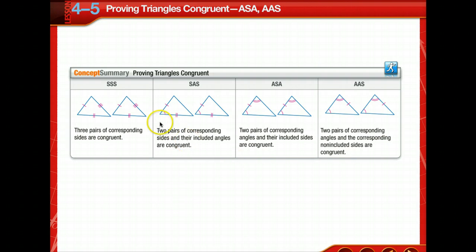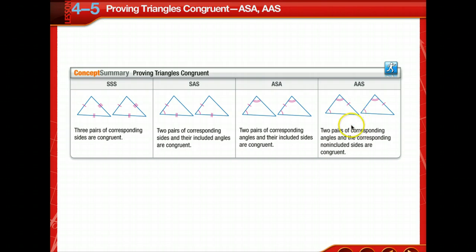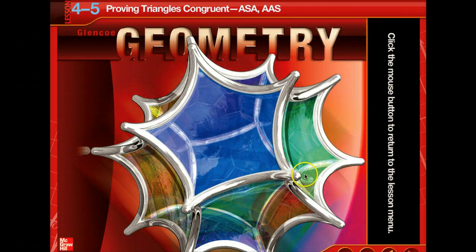Finally, the concept summary on proving triangles congruent. We've got side-side-side; we've got side-angle-side with the included angle; we have angle-side-angle with the included side; and we have angle-angle-side. Now take a minute and look at these combinations of S's and A's. Which one do you see that's missing? We don't have any donkeys in the group — there's no angle-side-side. There is no theorem for angle-side-side. So no donkeys in the house. You're ready to begin the assignment.